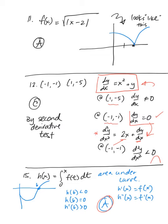In number 12, we're given two ordered pairs — negative 1, negative 1 and 1, negative 5 — and a differential equation dy/dx equals x squared plus y. Plugging in 1, negative 5: dy/dx does not equal 0, so it's not a critical number. Plugging in negative 1, negative 1: dy/dx equals 0. Taking the second derivative gives 2x plus dy/dx. Since dy/dx is 0, we get 2x, and when x equals negative 1 that's less than 0 — concave down — meaning we have a relative maximum. That is choice C.